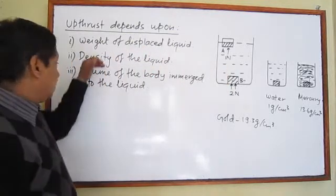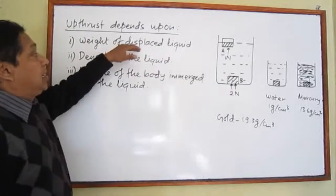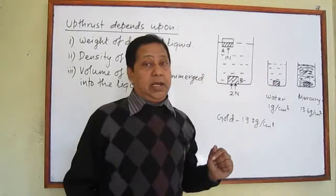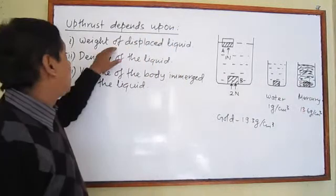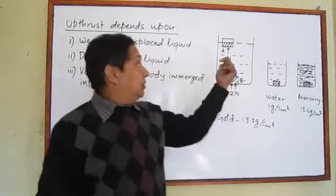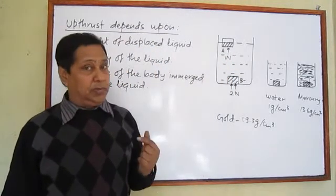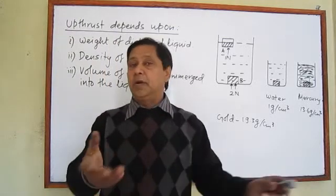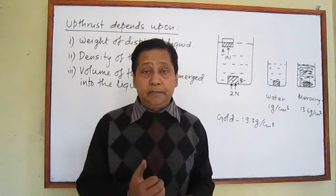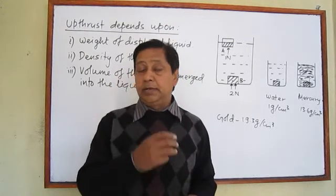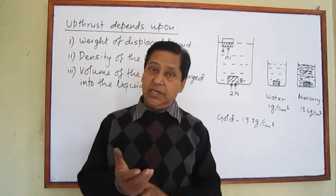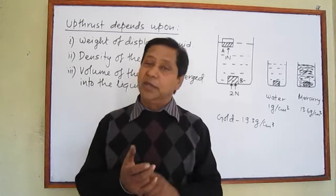Actually, the second and third points are directly or indirectly related to the first point. If density is more, the weight of displaced liquid will be more, and that's why upthrust will be more. If the volume of the body immersed into the liquid is more, then the weight of displaced liquid will be more, and upthrust will be more. We can conclude that upthrust — the upward force exerted by a liquid on a solid body — depends upon three major factors: the prime factor is the weight of displaced liquid, and the other factors are the density of the liquid and the volume of the body immersed into the liquid.